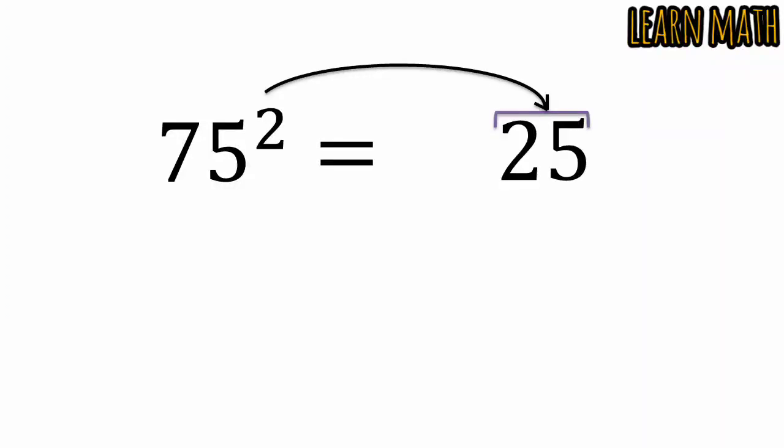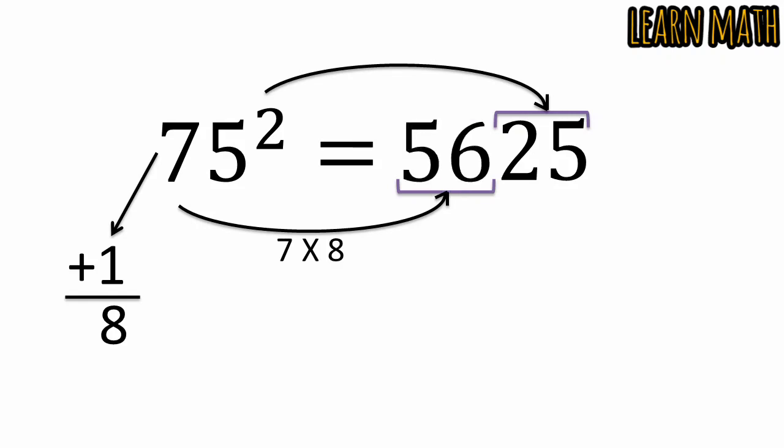Then add 1 with 7. So 7 plus 1 is equal to 8, and then multiply 7 into 8 is 56. So the answer of 75 square is equal to 5625. Very simple.